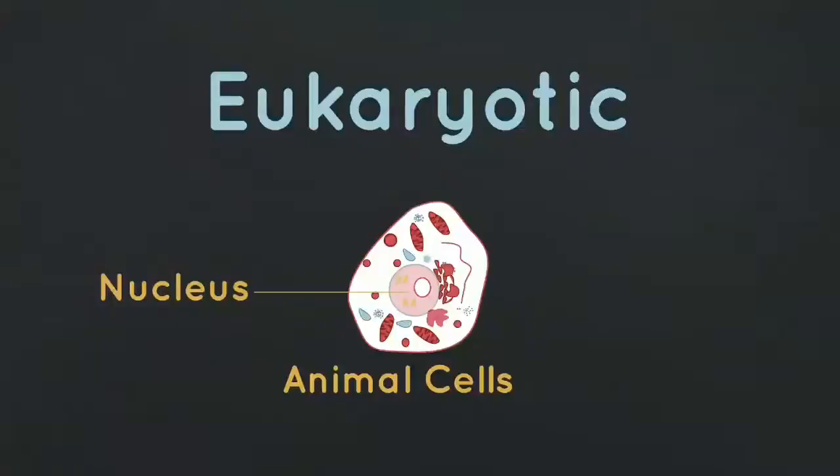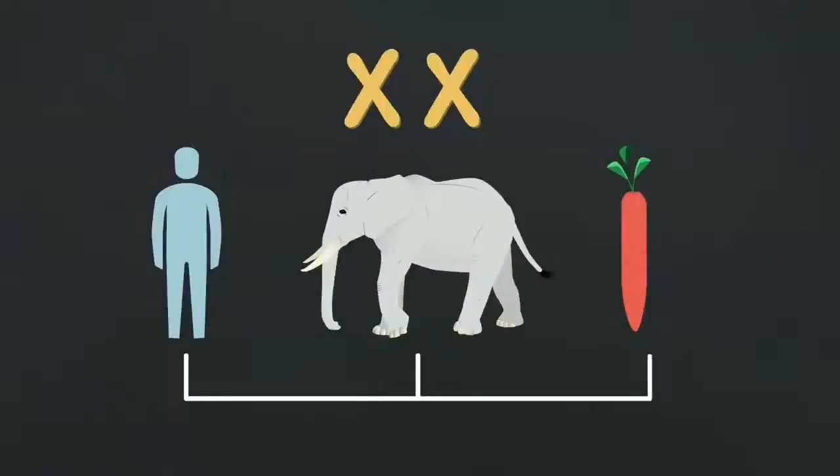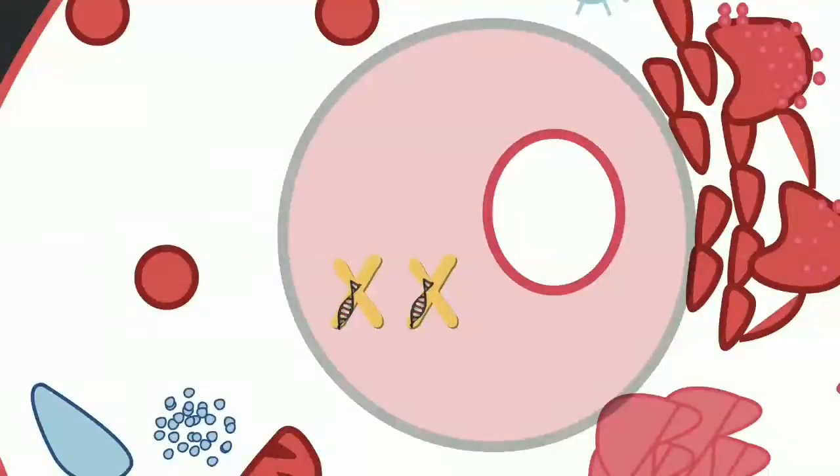there are X-shaped chromosomes. Chromosomes occur in pairs, but the number of chromosomes change depending upon the species. Humans have 23 pairs, elephants have 28 pairs, carrots have 9 pairs. DNA is found within these chromosomes.